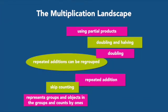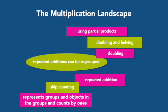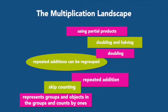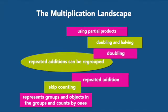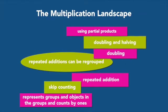And then we said, okay, now when they have the basic facts automatic, we should go to the standard algorithm. That was our trajectory. We left out the whole foundation of the development of the mathematics. Look at this landscape — look at all the stuff that would have been left out.